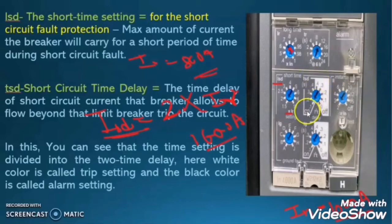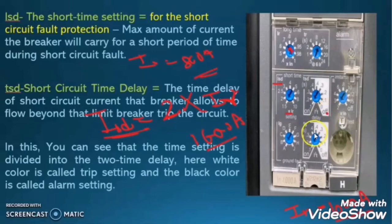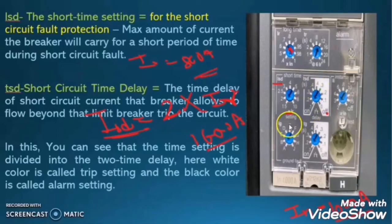You can see there is a black section with values 0.1, 0.2, 0.3, 0.4 in the ON position, and a white section with the same values in the OFF position. In the ON section, the breaker will take action to trip. In the OFF section, the breaker will not trip — it will only give an alarm for the short circuit fault. In our setting, the dial is in the ON position, so when there is a short circuit current of 1600A for more than the set time, the circuit breaker will trip.